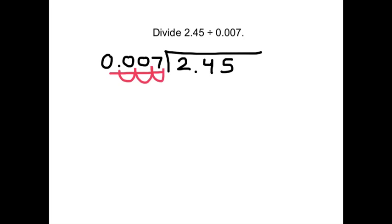Here's our last one. Divide 245 hundredths by 7 thousandths. Alright, same problem as before. Our divisor has a decimal in it. We want to get rid of it. 1, 2, 3. Move it 3 times to the right.